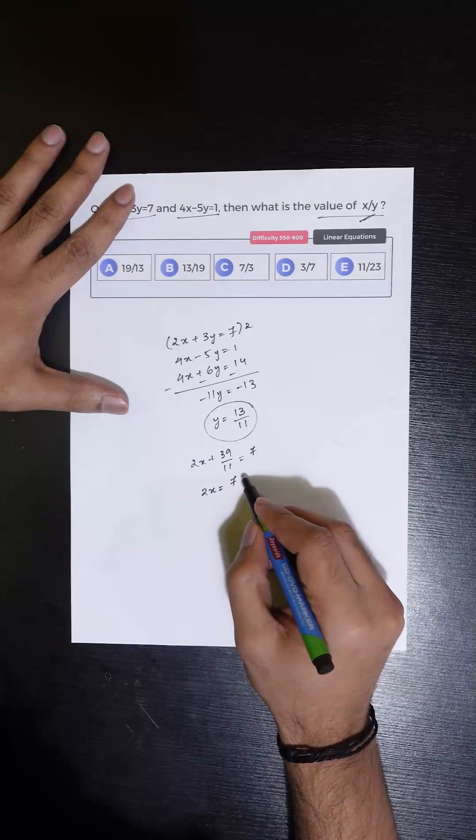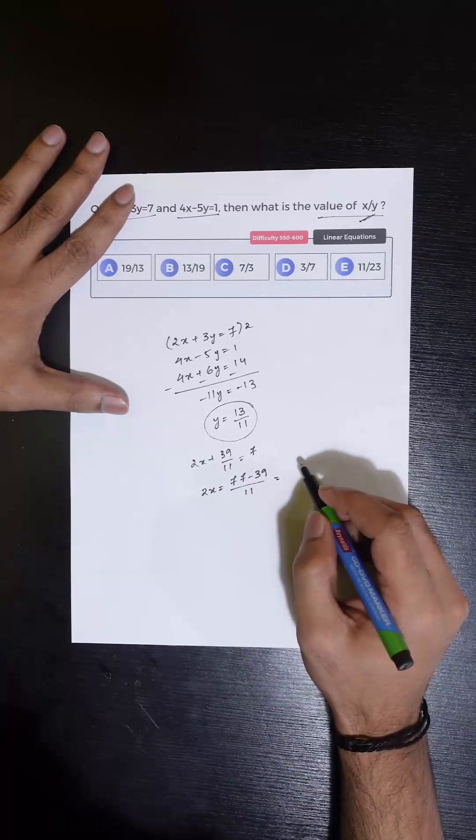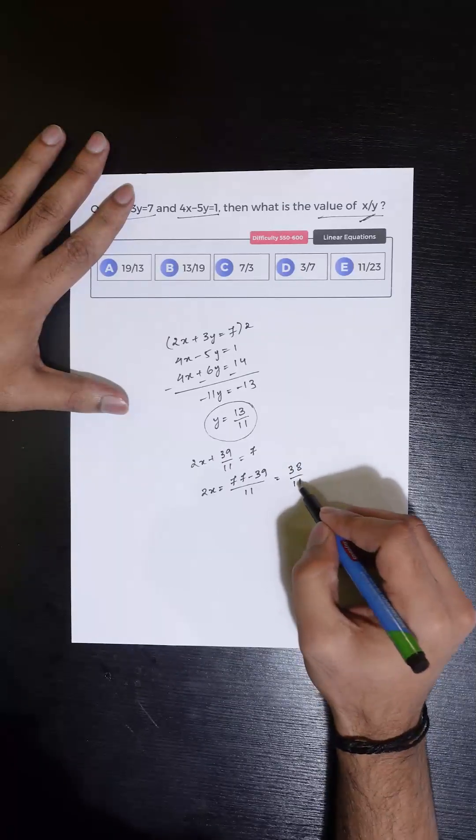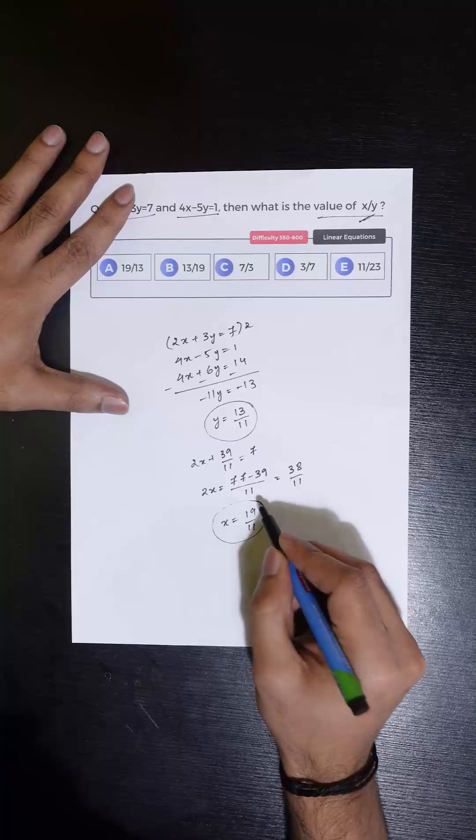And we get the value of 2x to be 77 minus 39 by 11, which is equal to 38 by 11. So the value of x is 19 by 11.